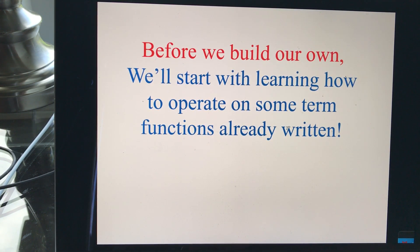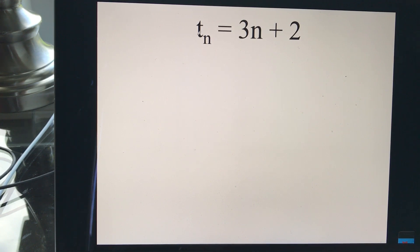Now just before we get into building our own, we're just going to take a look at how to operate with some functions that are already written. So here's what it looks like. So t is going to be term. So t, this is subscript n. So t is the term, n is the number. And the actual operational part is just this, 3n plus 2.